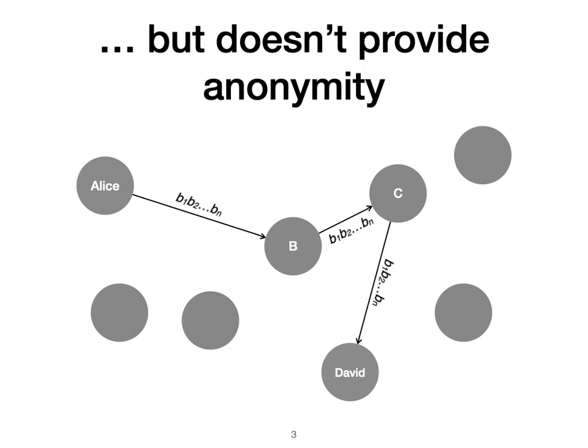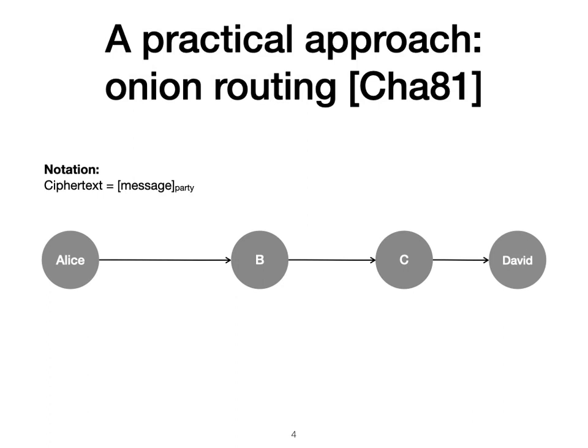So what can we do? A practical approach is onion routing. In onion routing, Alice first picks a routing path for the message. In this example, it is Bob, Charlie, then David. And she produces a layered encryption object called an onion, which she can just send to the first intermediary on the routing path, Bob.